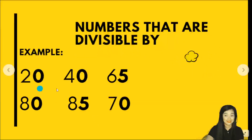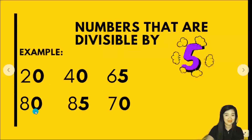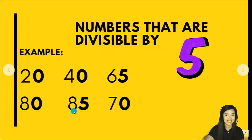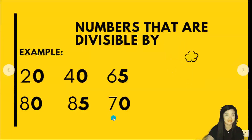20, 40, 65, 80, 85, and 70 are all divisible by 5.